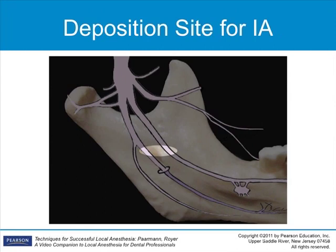Because the lingual nerve runs just medial and anterior to the inferior alveolar nerve, this nerve is normally anesthetized during the same needle insertion as the inferior alveolar injection. The lingual nerve innervates the anterior two-thirds of the tongue, the floor of the mouth, and the lingual gingiva of all the mandibular teeth in the quadrant. This nerve does not innervate any pulpal tissue.